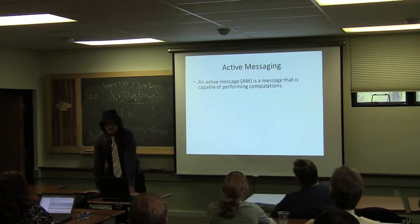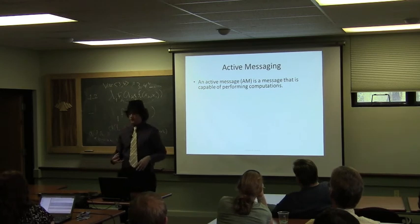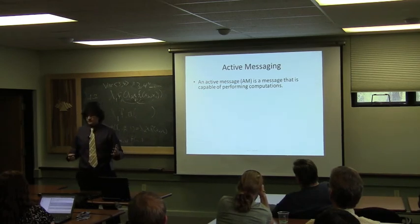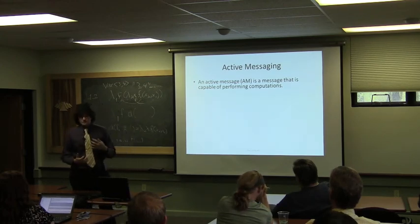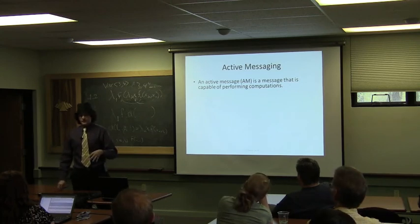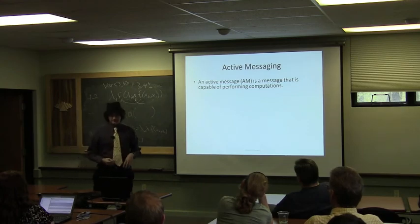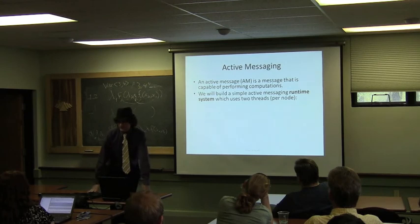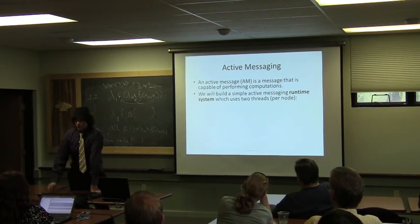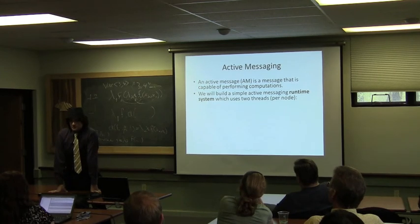Active messaging — an active message is an object that will perform computation on its own. Normally when you send data it's just data, and there's code on the receiving end to process it. With active messages, there's a reference to code or actual code contained in the message itself, so when it arrives it gets executed without any real logic needed on the receiving end other than turning it back into an invocable object. We're going to build a simple active messaging runtime system of about 500 lines of code that sends a functor to print hello world on another machine.